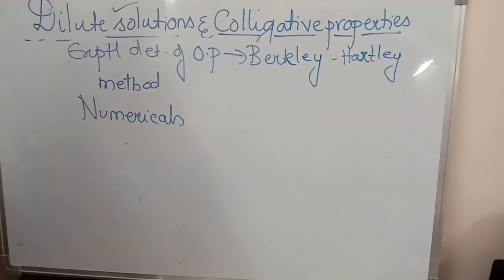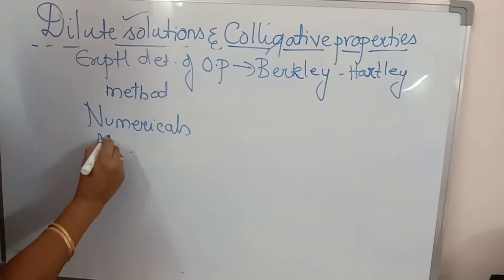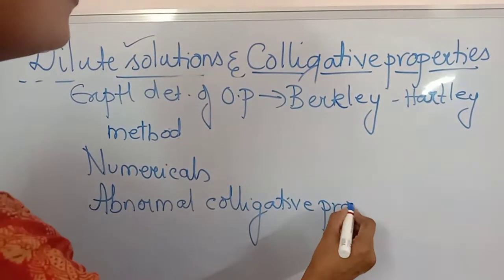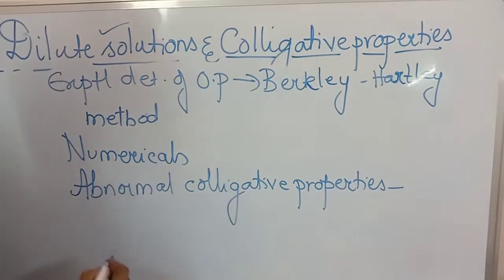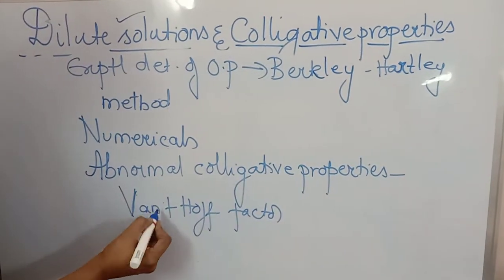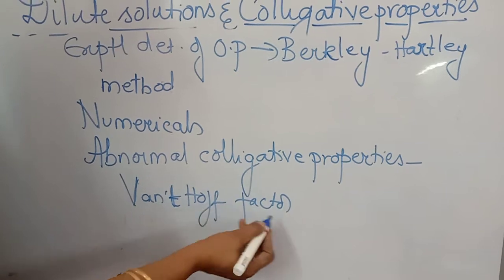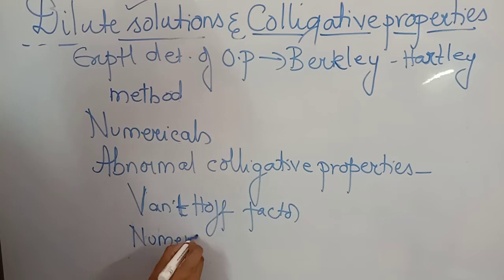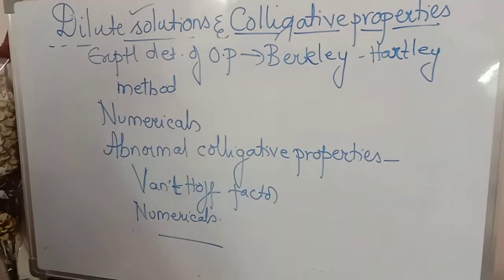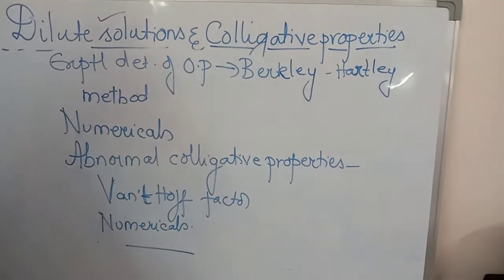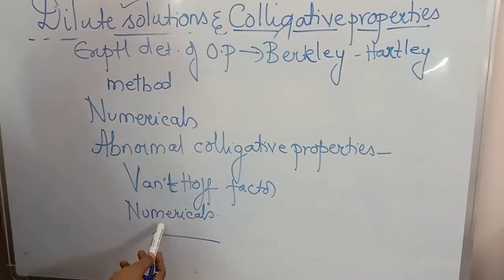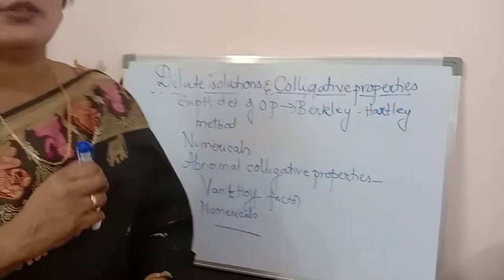Next is numericals. At the end we have abnormal colligative properties. Under this we will be learning Van't Hoff factor — V-A-N-T-H-O-F-F — and under this also we will be having numericals. So these are all the topics in dilute solutions and colligative properties — four colligative properties in total. At the end, abnormal colligative properties with Van't Hoff factor and numericals. Kindly note down all these topics.